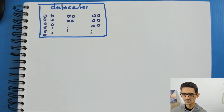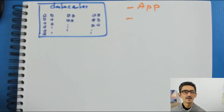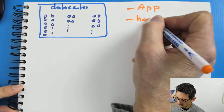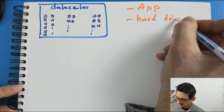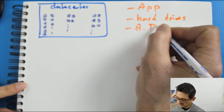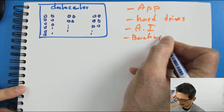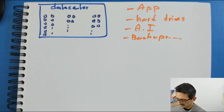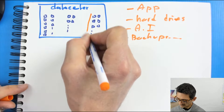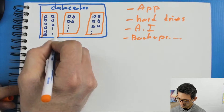Let's see how it looks. On this data center, you will have several services: services for applications, services for hard drive or storage, services for AI and artificial intelligence, or backup services, etc. That's not one server dedicated to one service, but a group of servers dedicated to one service.